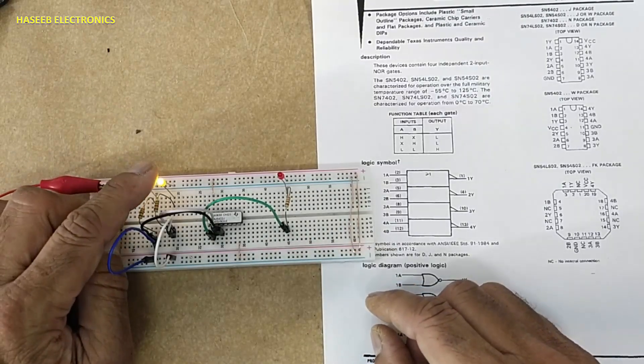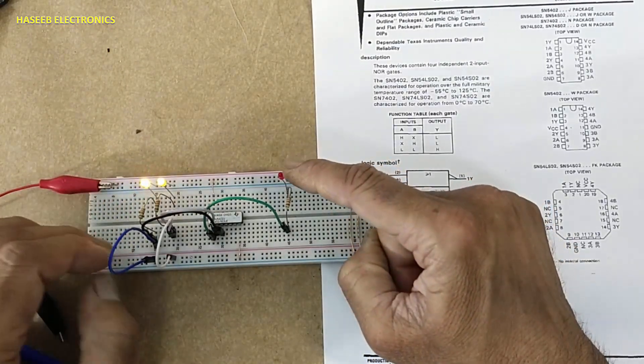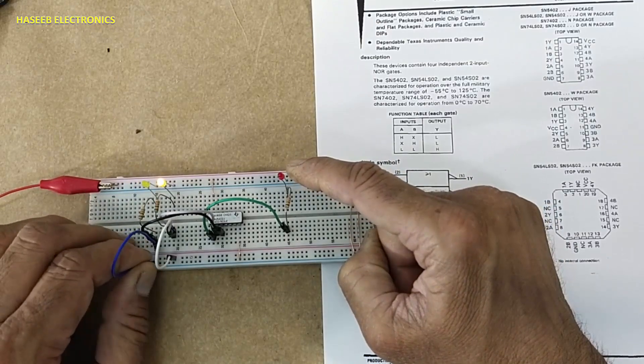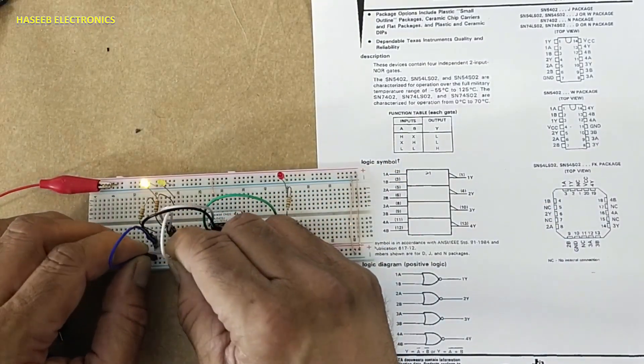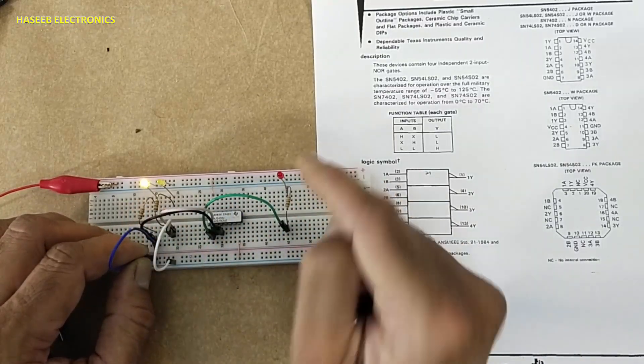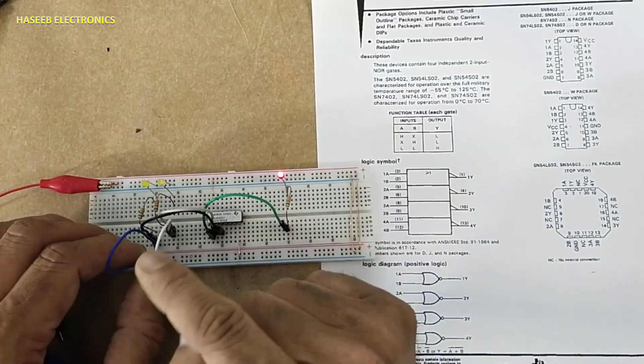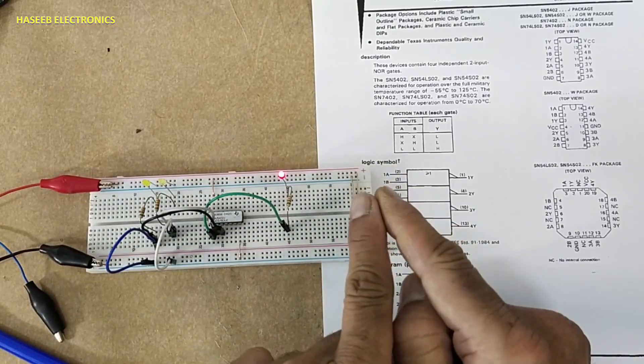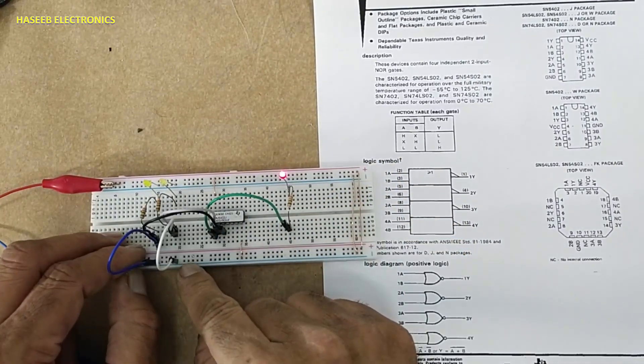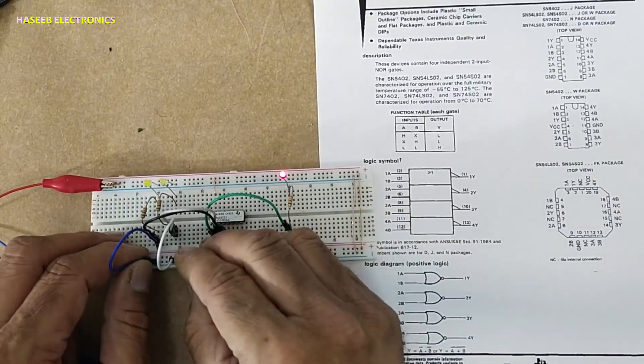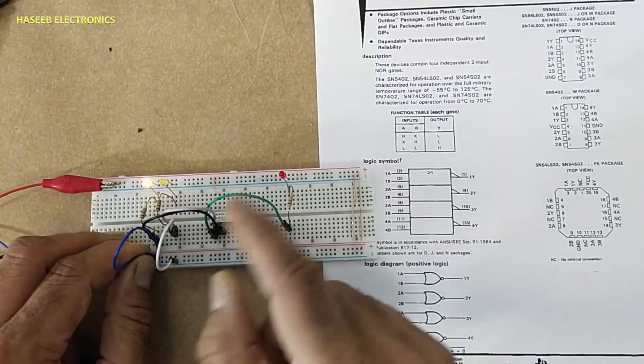All inputs are high, output low. Anyone input high, output low. If all inputs are low, the output is high. It is opposite to OR gate. All inputs are low, output is high. Anyone high, output low.